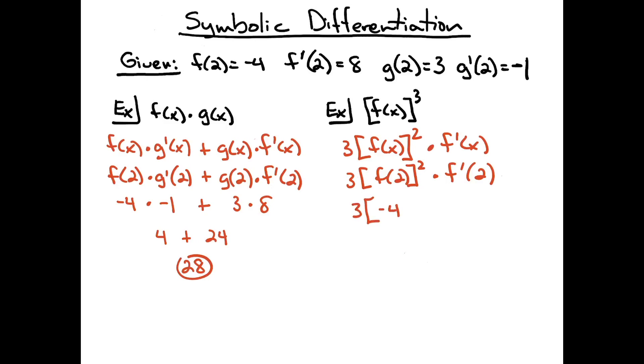So it'll be 3 times f of 2, which is negative 4 squared. And then f prime of 2, which is 8. Negative 4 squared is going to be 16. So then I'll have 3 times 16 times the 8 for a final answer of 384.